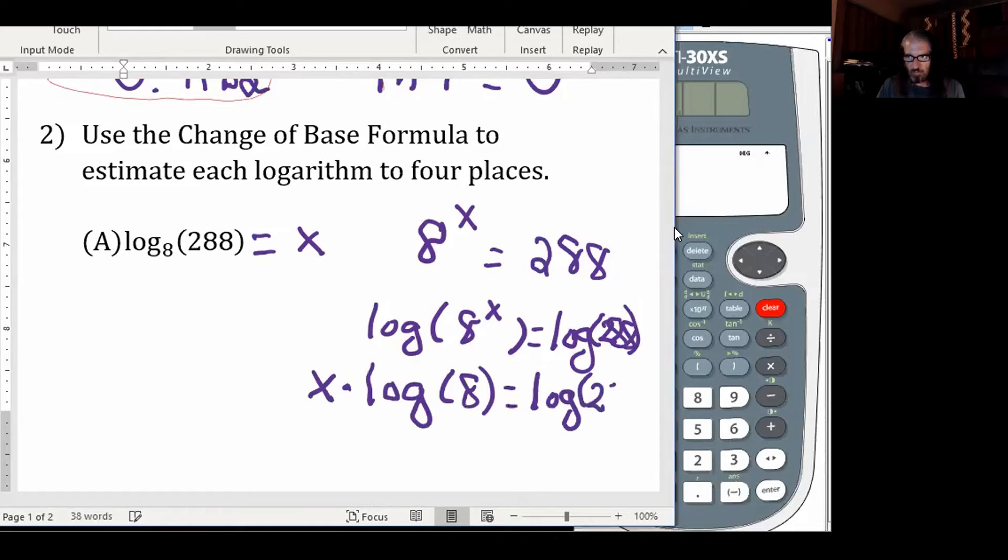Since the only thing that's happening to x, whatever log of 8 is, it's a number, and although it's written behind it instead of in front of it, it's some number times x. To get x alone, you would divide by that number being multiplied to it.